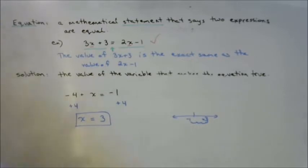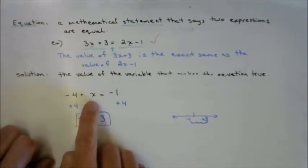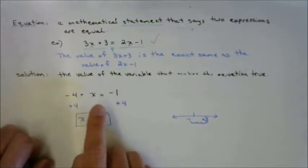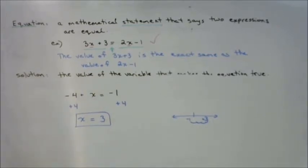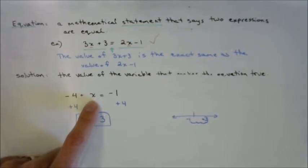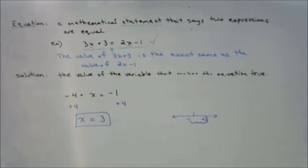If you wrote x equals 2 it would not be true: negative 4 plus 2 is negative 2, which doesn't equal negative 1. Can there be two solutions? Yes — when we get into quadratics. Right now we're working with first-degree equations, meaning x to the power of 1, which can only have one solution. x to the power of 2 can have two, one, or zero solutions. The maximum number of solutions equals the degree of the equation.